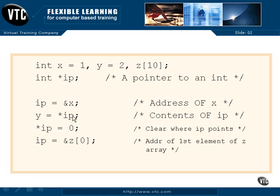So what happens? We go to ip, which is a variable in memory. It contains an address. We get that address. We know that that address is where x is located. Then we go to that place in memory and get the thing that's in that place in memory.